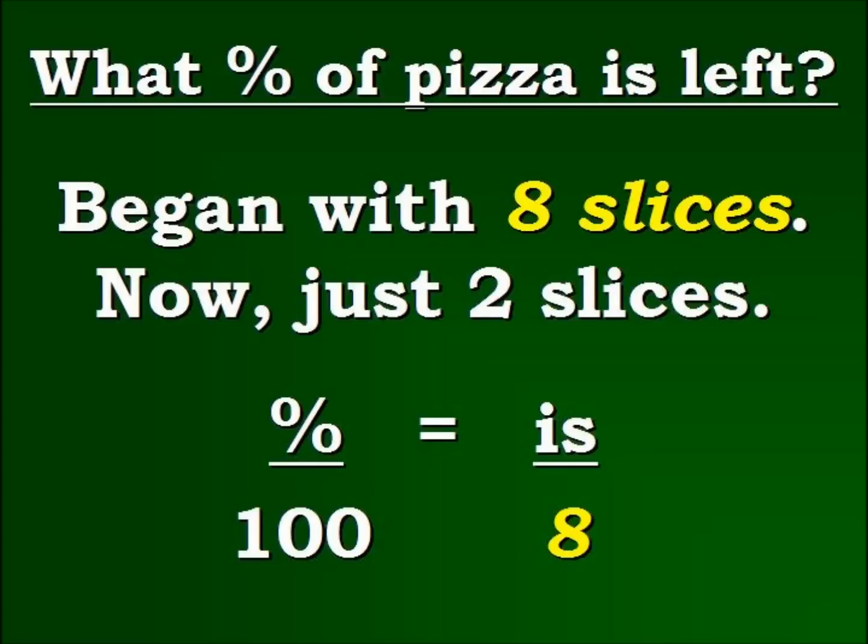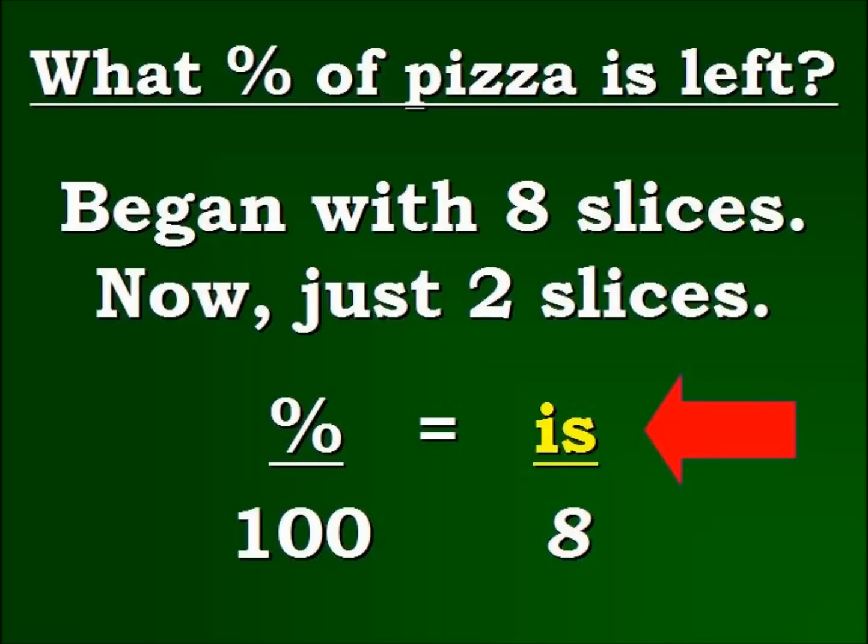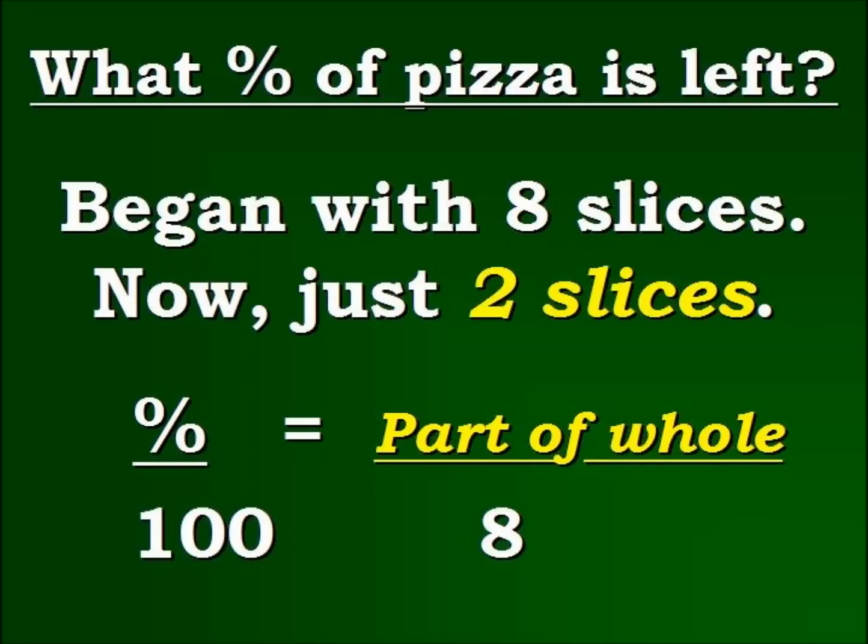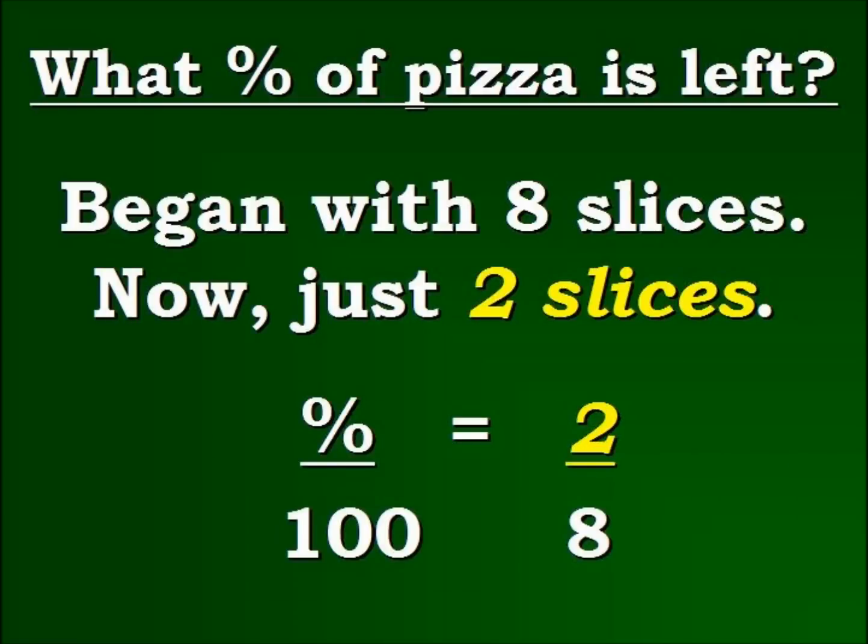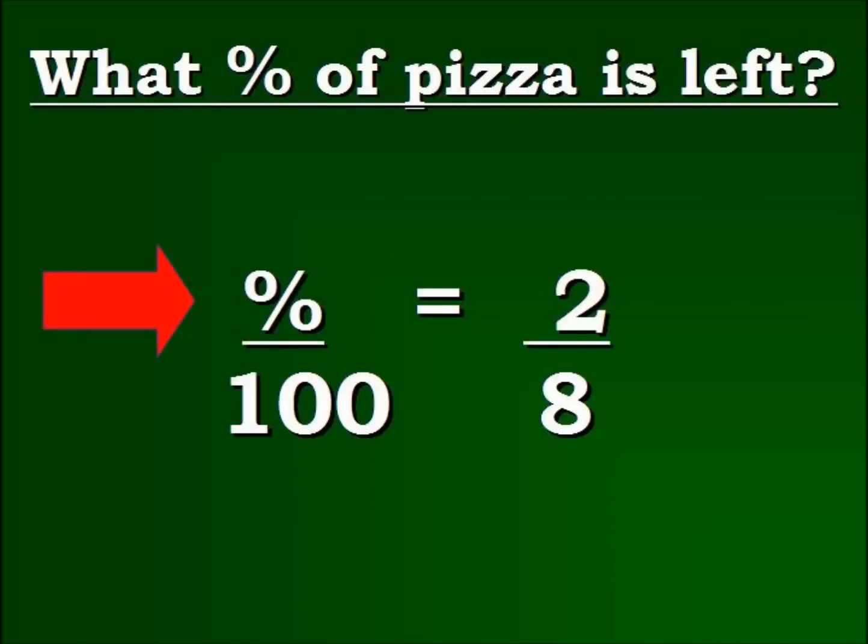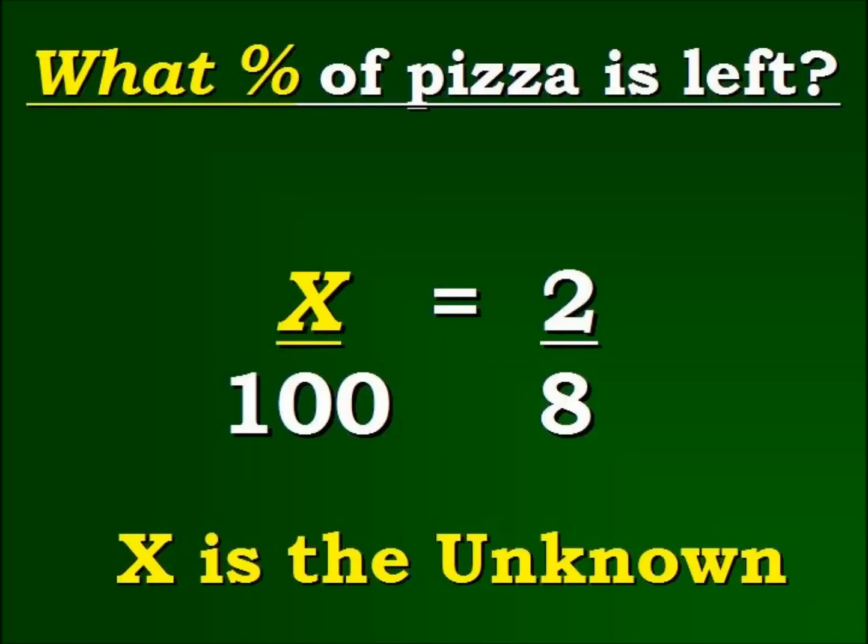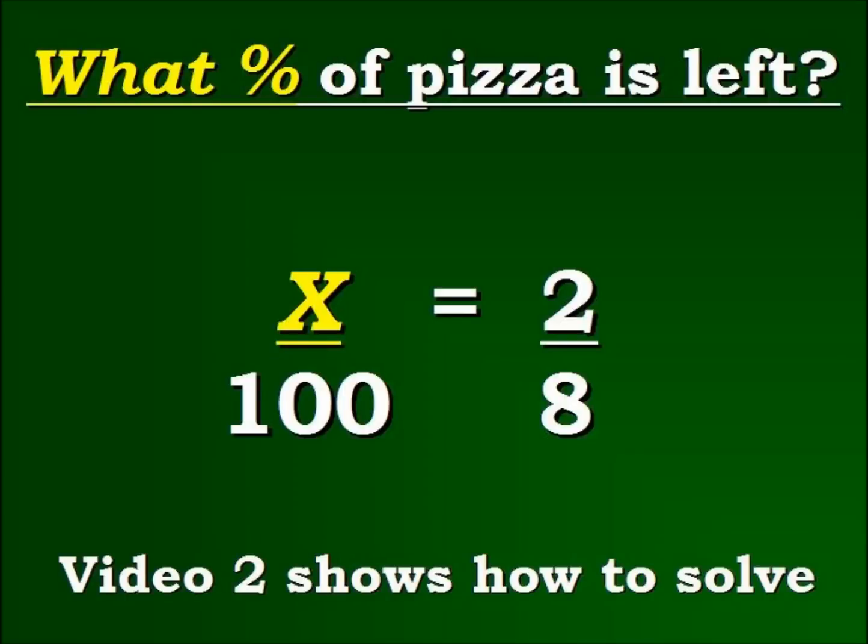We're going to continue on with the is, which of course, as we said before, is part of the whole. So what is part of the whole? The two slices. So the last part we have to figure out is the percent. And at this point, we don't know the percent. So we're going to put an x there for the unknown, and if you want to solve this problem further, you can go look at video 2 and see how to solve this.